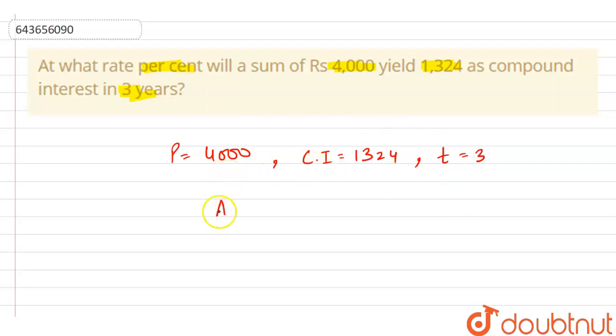So we can say that here the amount A which equals P plus CI, so we can write 4000 plus 1324, so we can say that here our amount is 5324.